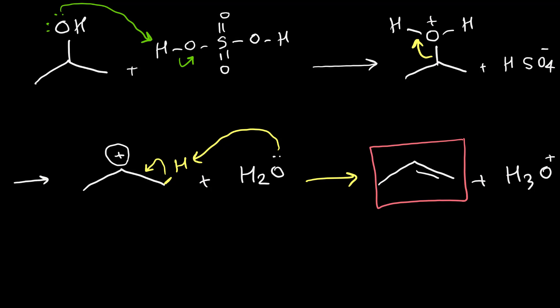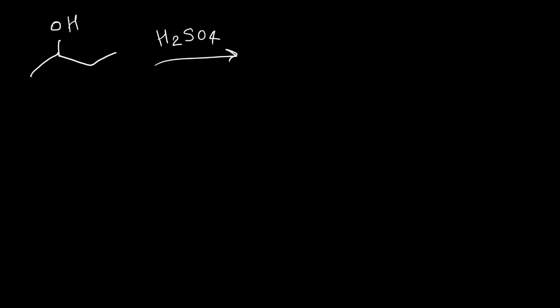Because of carbocation formation, we may have more than one product, and sometimes we also have rearrangement. Here is the second example: we would like to have dehydration of 2-butanol. The first step is protonation of the OH group, so the OH group converts to OH₂⁺, then it leaves the structure to form a carbocation.